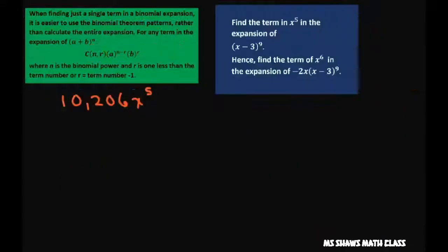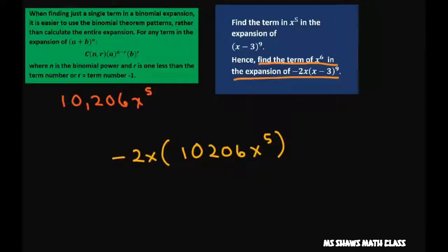Now we have to do the last part. And it says, hence, find the term of x to the 6th in this expansion. So all you're going to do with that is just take negative 2x times 10,206 x to the 5th and multiply that out. Negative 2 times this number is negative 20,412 x to the 6th, and that's your final answer.